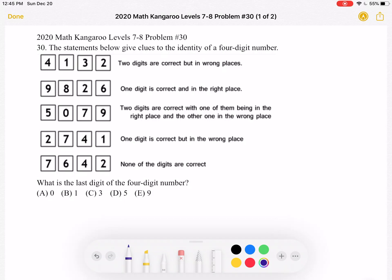What is the last digit of the 4-digit number? A, 0, B, 1, C, 3, D, 5, or E, 9?